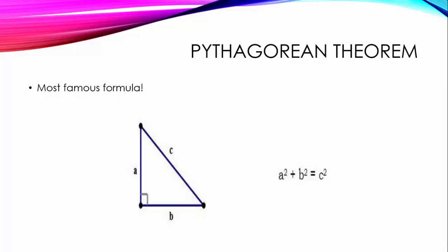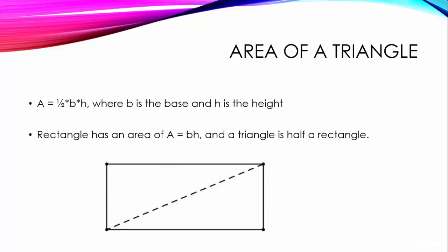Let us look at a couple of problems to show its other guises. Area of a triangle. As you may remember from high school, area is equal to half into base into height. If you are having trouble remembering this, simply remember that a rectangle has an area of A equals BH and that a triangle is half a rectangle.